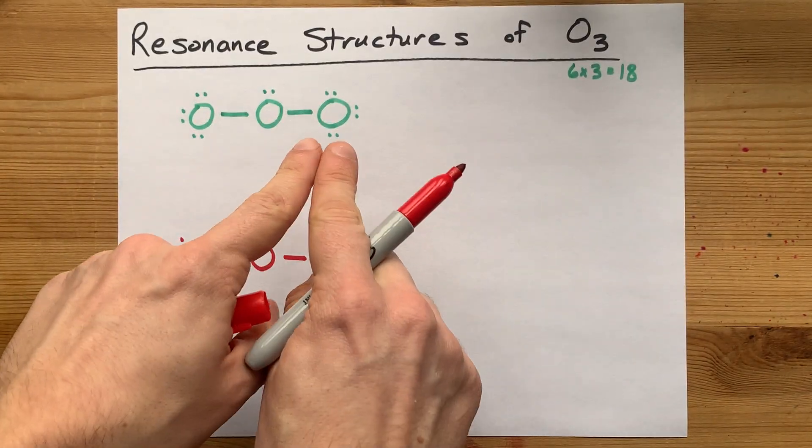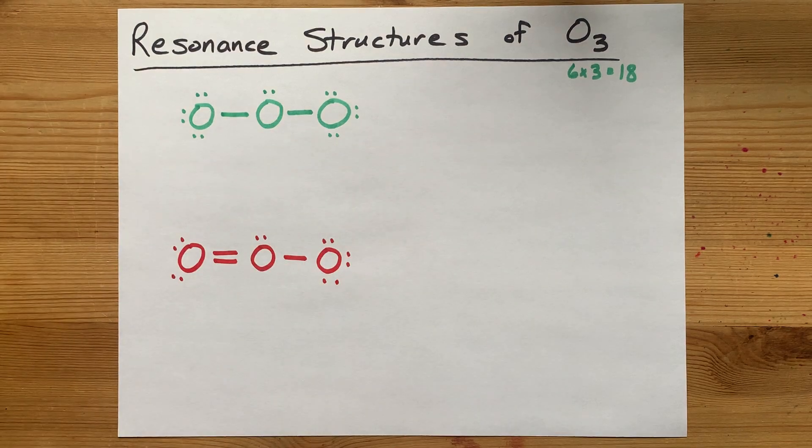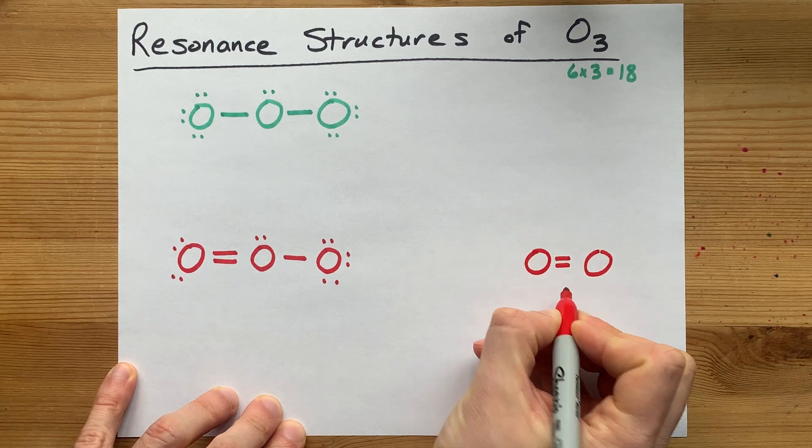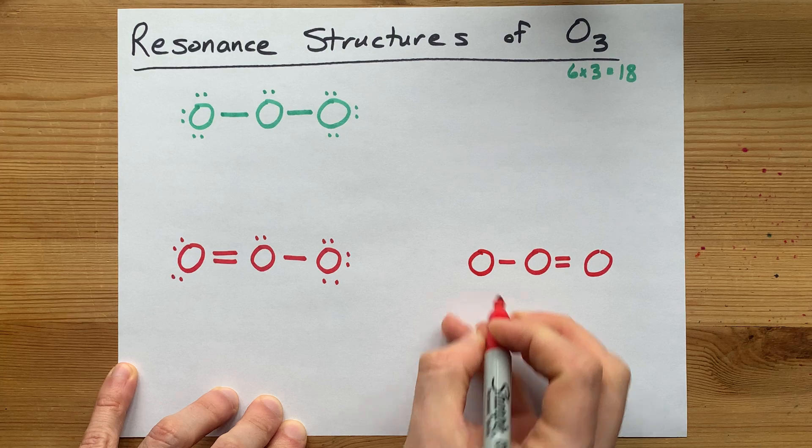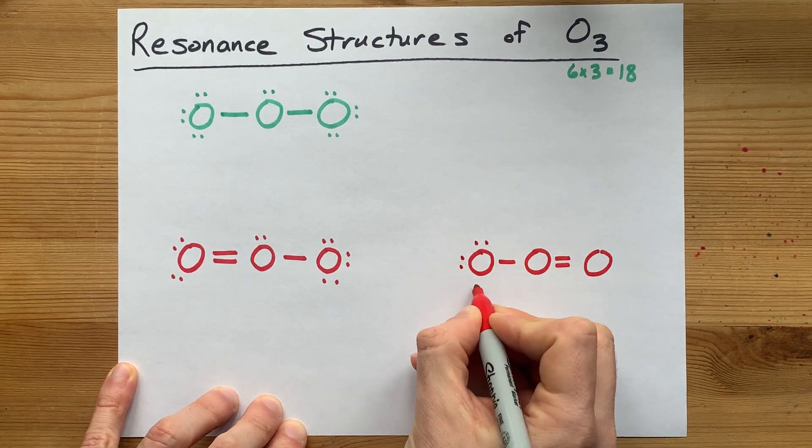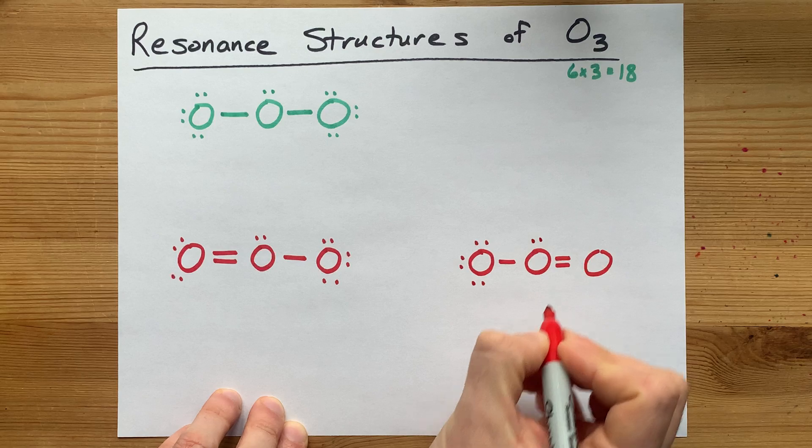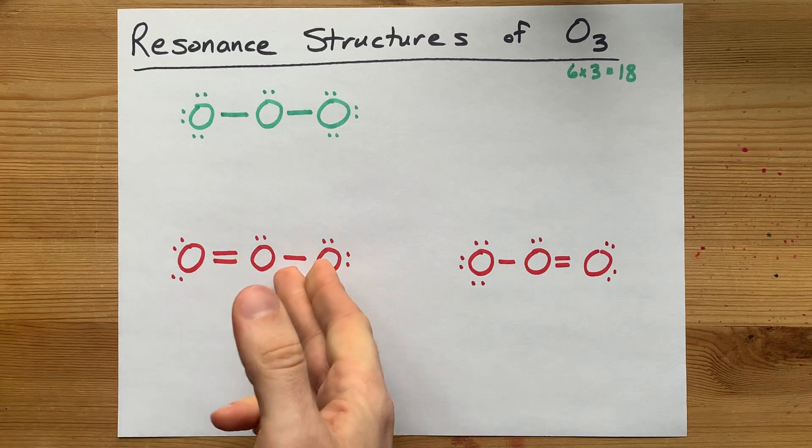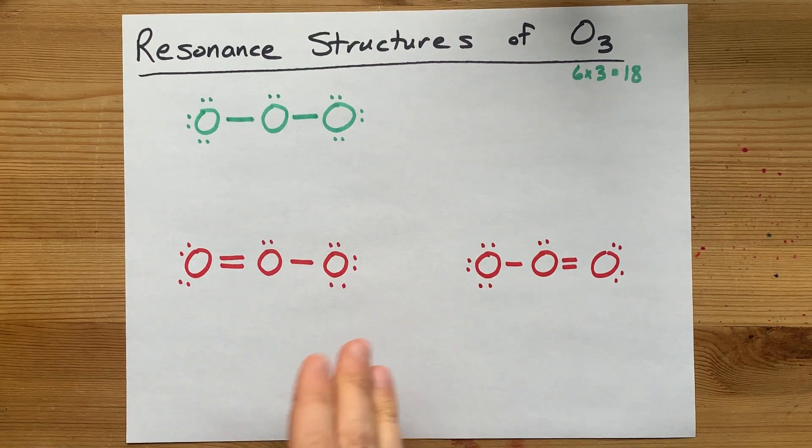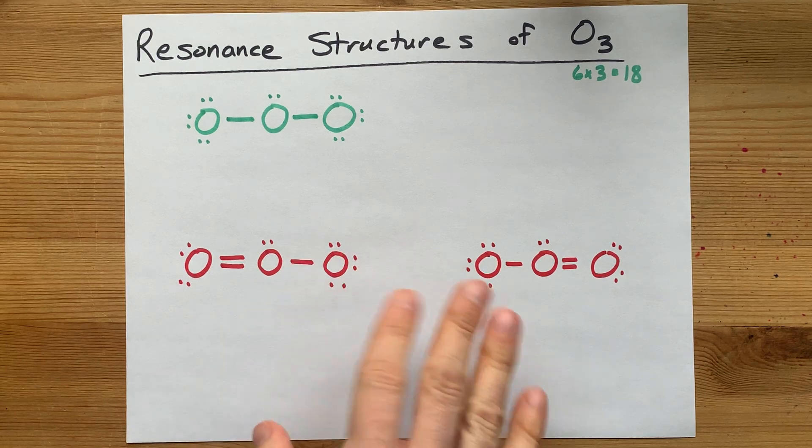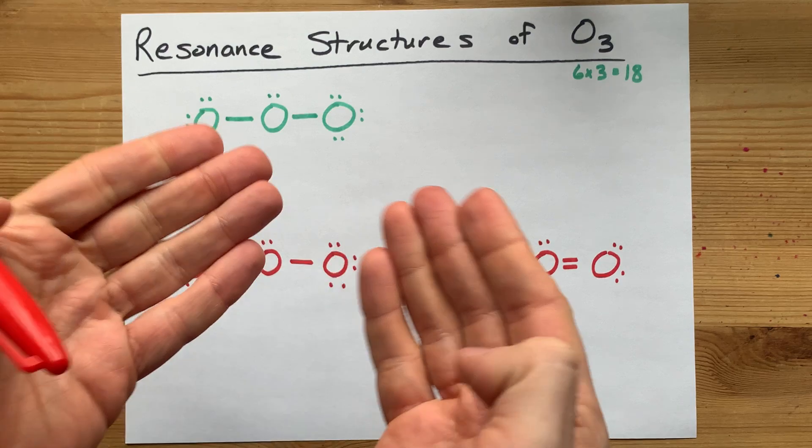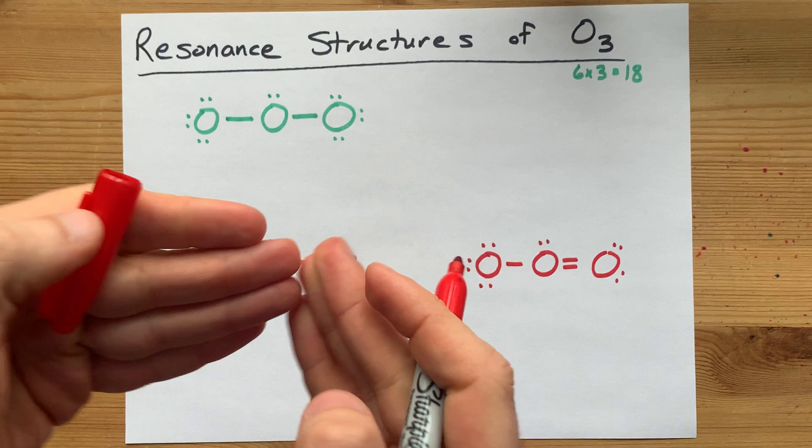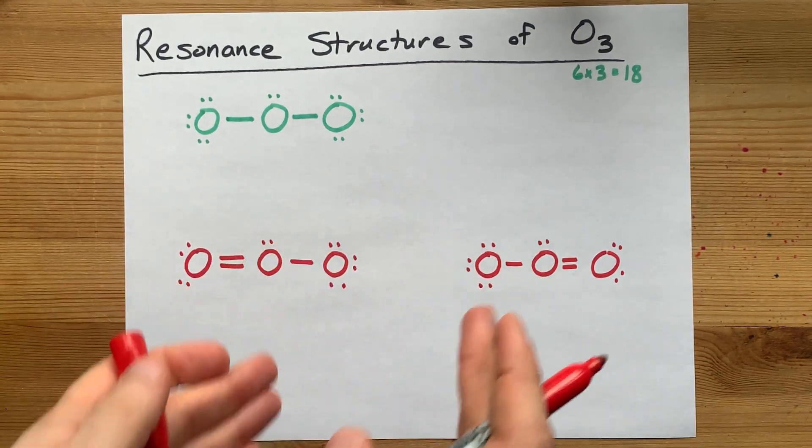But what if two electrons came in from the right instead? You'd have that oxygen double bonded to the oxygen to the left, and then that's single bonded to the next one. These six lone pairs are untouched. These two are left alone and these four were left alone as well. Now we have two equally valid Lewis structures here. The way that these contribute to make the actual structure of ozone is that the actual structure is about halfway in between these two.